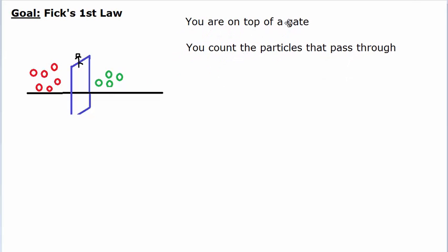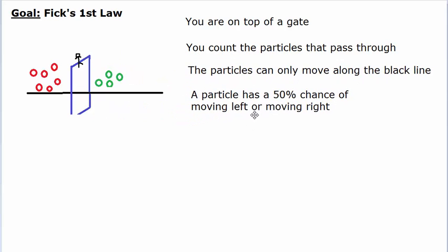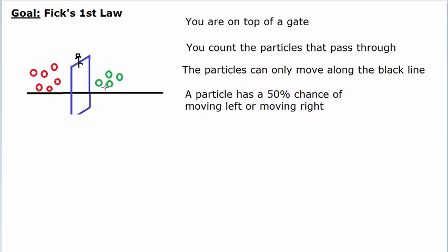The statement of the problem is as such: you're on top of the gate and you're interested in counting the number of particles that pass through the gate. These red and green particles, or cars, can only move along the road — they can only move left and right, so they're one-dimensional. Each particle has a chance of moving to the left or to the right, and they don't discriminate between those two directions. So it's a 50% chance of moving left or a 50% chance of moving right.